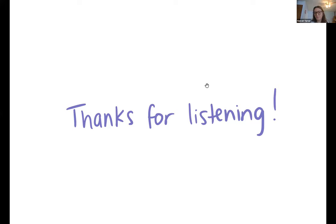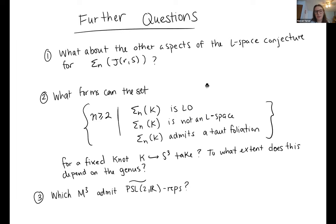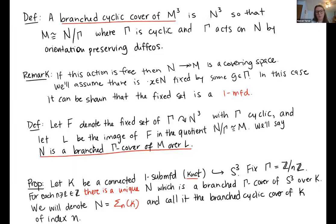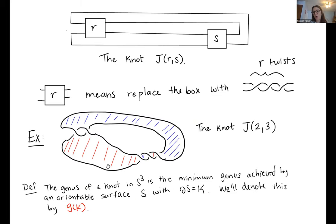Are there any other questions? Yeah, I got just a quick question. Is it easy to know what the genus of these JRS knots is? Yes, I don't know if I can come up with it off the top of my head, but basically from the diagram, these knots are all alternating, and so if you look at an alternating diagram, there's an algorithm that gives you a surface, and it's going to be the minimal genus one. If you just carefully draw this picture, it's just a function of the parameters what the genus will be. Okay, thanks. Sorry if that wasn't specific enough. No, that was good.